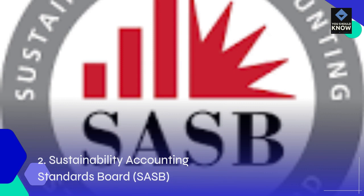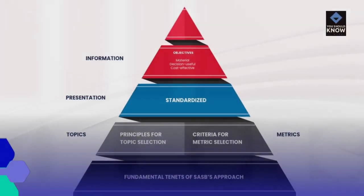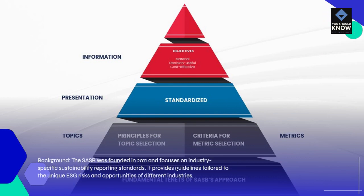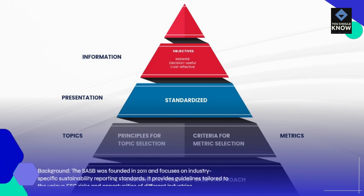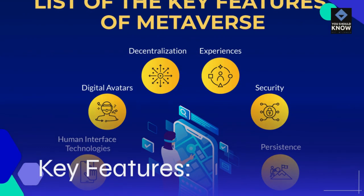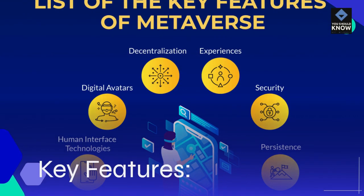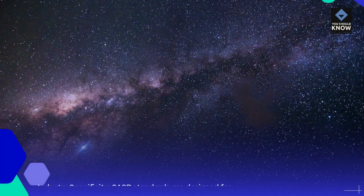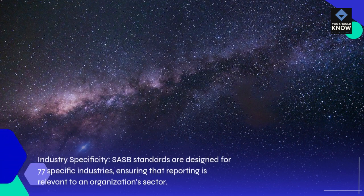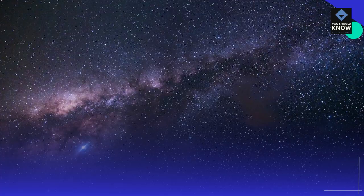Sustainability Accounting Standards Board — Background. The SASB was founded in 2011 and focuses on industry-specific sustainability reporting standards. It provides guidelines tailored to the unique ESG risks and opportunities of different industries. Key Features. Industry Specificity: SASB standards are designed for 77 specific industries, ensuring that reporting is relevant to an organization's sector.